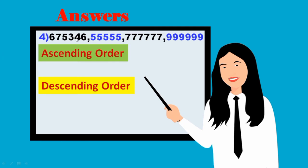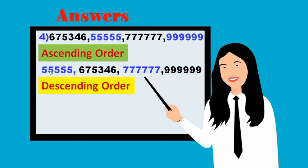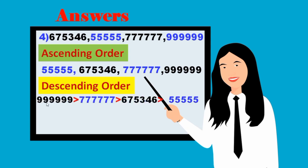Fourth problem, see here: this one has 6 digits, this one 5 digits, this one also 6 digits, this one also 6 digits. The smallest is the 5-digit number. Among 6-digit numbers, we compare the lakhs place to find the order. Ascending order: 55,555 is less than 6,75,346 is less than 7,77,777 is less than 9,99,999.